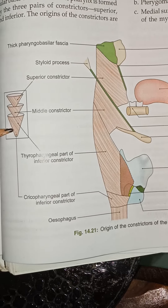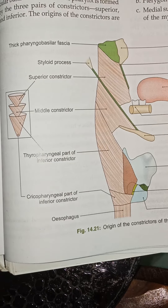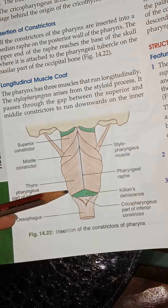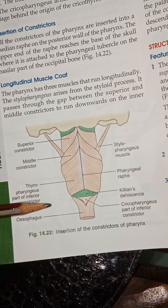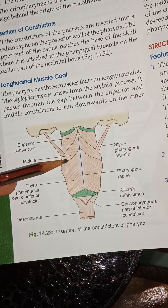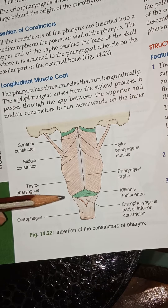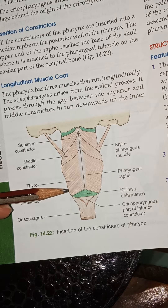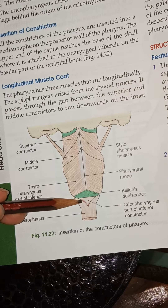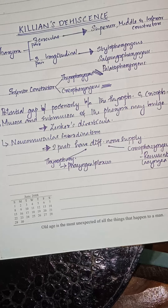This is the arrangement of the constrictor muscles in the pharynx: the inferior constrictors overlap the middle constrictor, which in turn overlaps the superior constrictor. But in the posterior wall of the pharynx, the lower part of thyropharyngeus forms a single sheet of muscle not overlapped by the middle or superior constrictor. This is a weak area situated below the vocal fold or the upper border of the cricoid cartilage, bounded inferiorly by the sphincteric cricopharyngeus muscle.